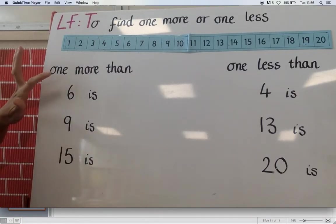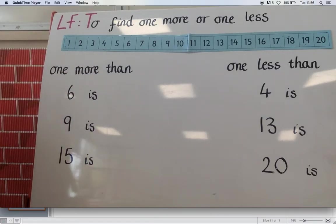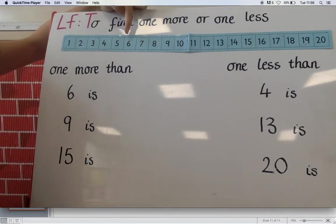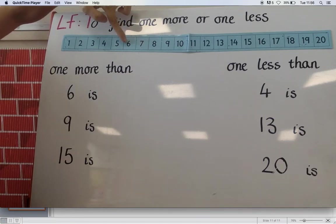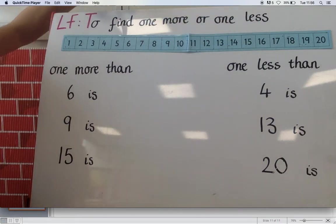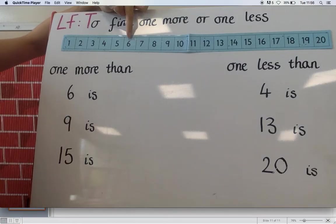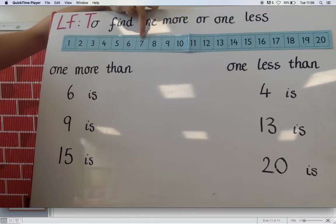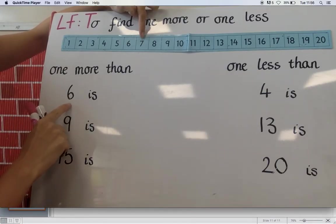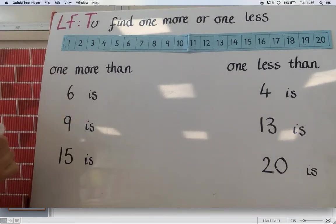So let's try the one more than. We're finding one more than six. Now how we do this is on our number line we need to find the number six. So you find the number six and we want to find one more than. Now if it's more it's going to be greater. So we're going to go this way on the number line. Now only wants to find one more than. So we need to do one jump this way. So one jump leads us to what number? Seven. So one more than six is seven.